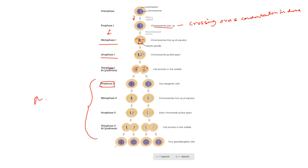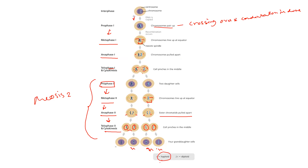These two cells enter prophase two, where meiosis two begins — condensation is done and the nuclear envelope breaks down. In metaphase two, chromosomes align at the metaphase plate. In anaphase two, sister chromatids are pulled apart and move to opposite poles. In telophase two, the nuclear envelope reassembles, a furrow forms, and cytokinesis produces two haploid cells from each cell — giving four haploid daughter cells total. Key point: in anaphase one, chromosomes are pulled apart; in anaphase two, sister chromatids are pulled apart.